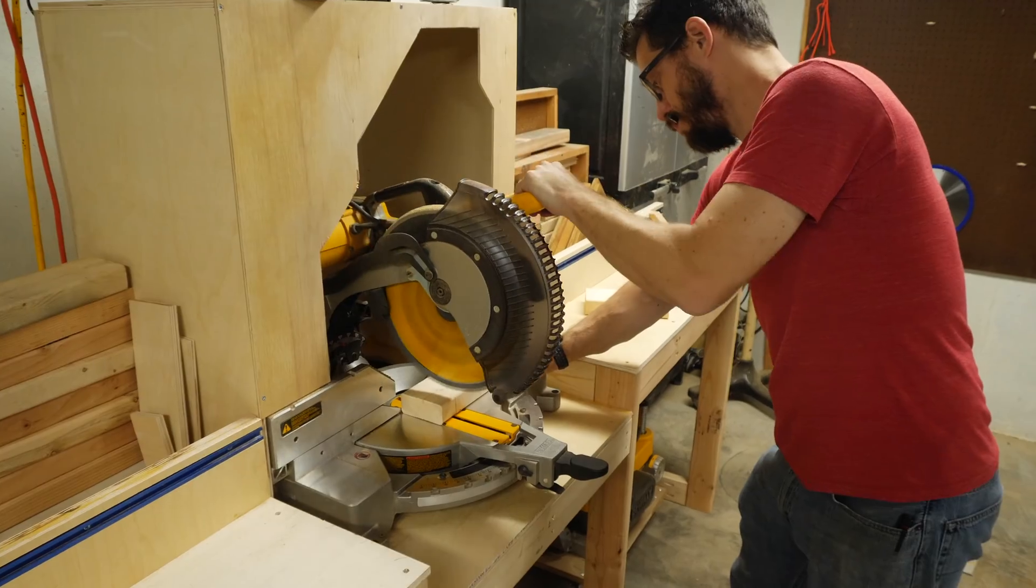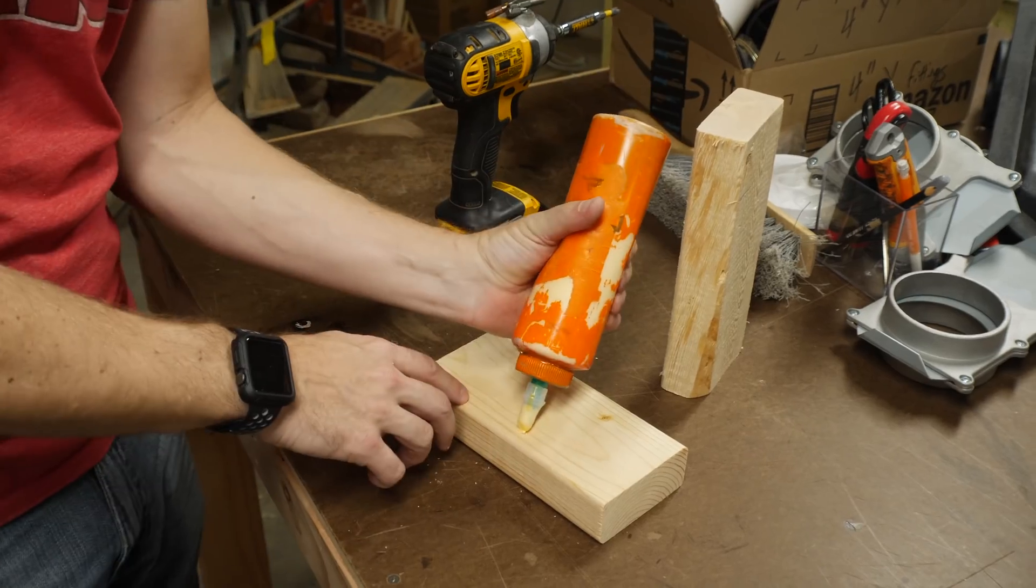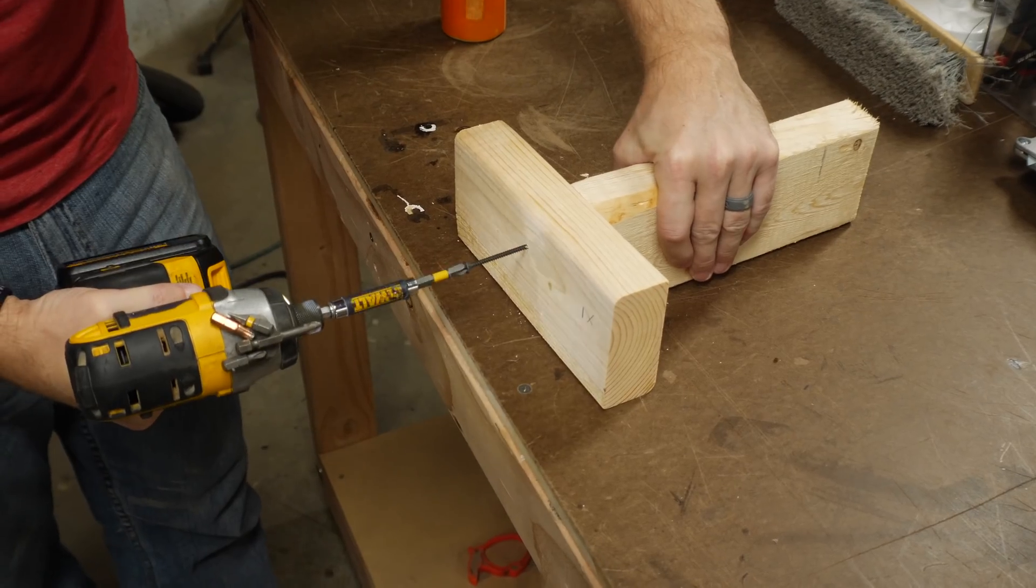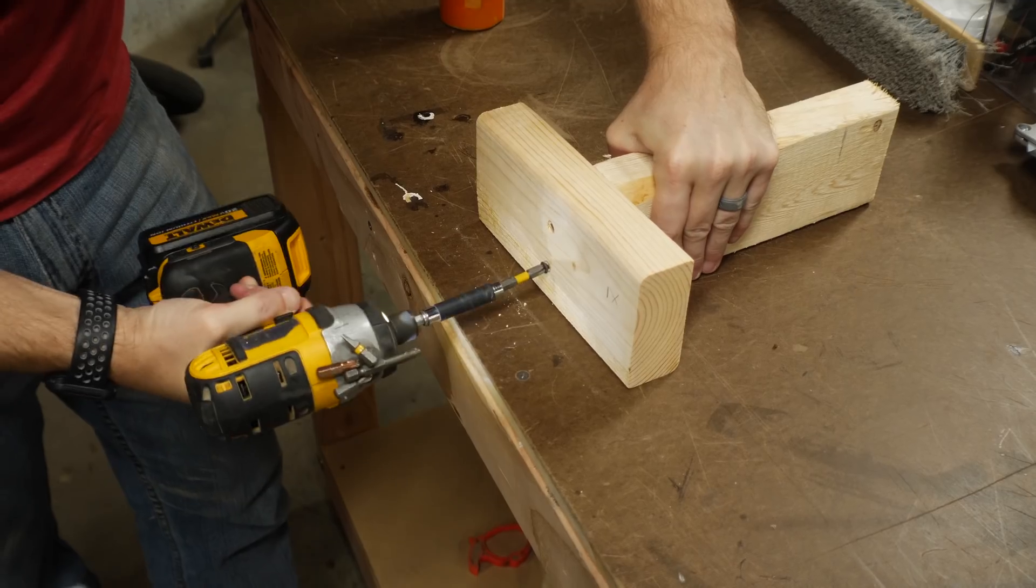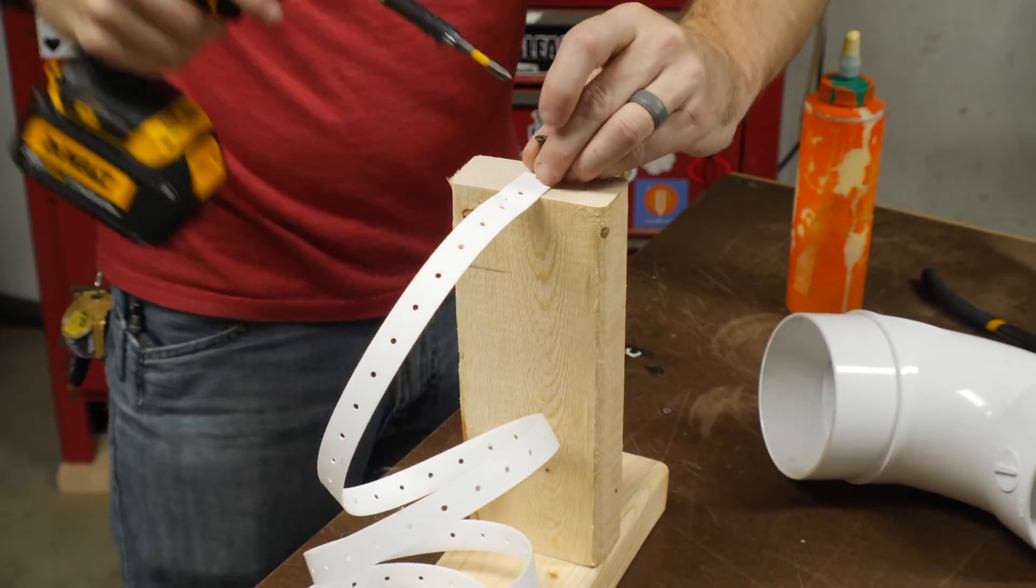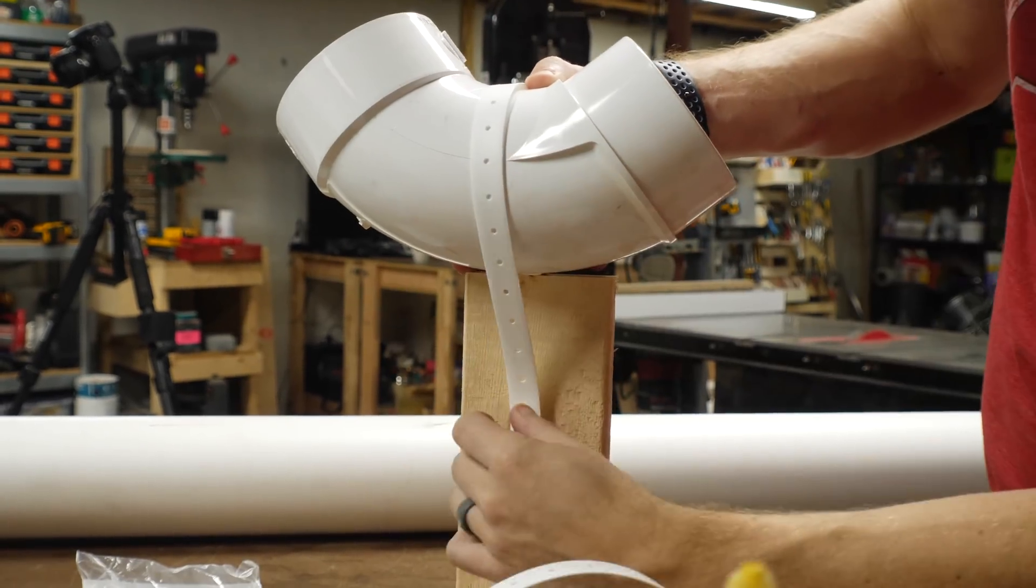And since the inlet to the dust collector is about a foot off the ground, I made a simple stand out of some 2x4 scraps to hold my pipe at the right height. I used the plastic pipe strapping to hold these in place. It's just the same as the metal stuff that you see in plumbing stores, this is just a little bit easier to deal with.